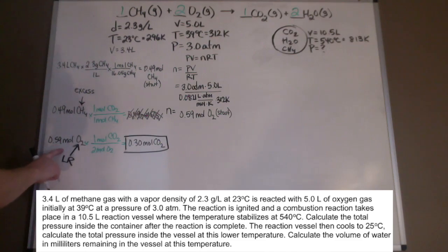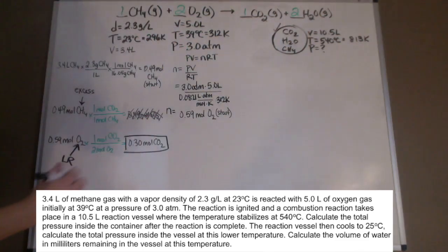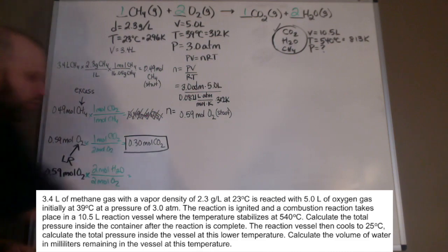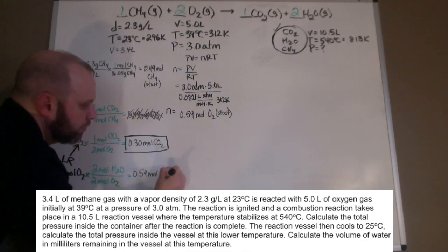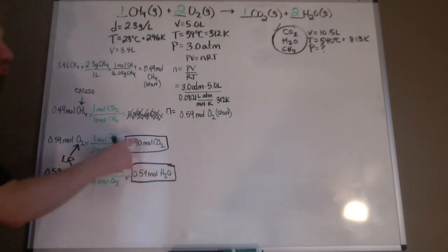Now that we know our limiting reagent, we can take it to our other product, water. I'm going to take 0.59 moles O2 and multiply it by my mole ratio. 2 moles of O2 to 2 moles of water based on the balanced equation. So I will get an answer of 0.59 moles of water. That is my second product.